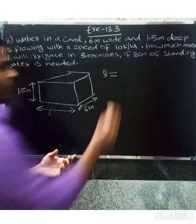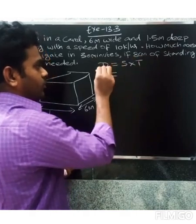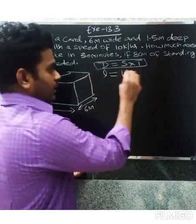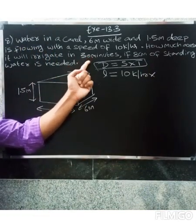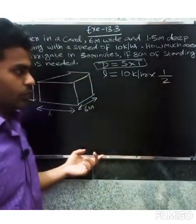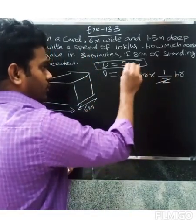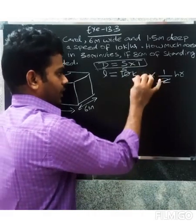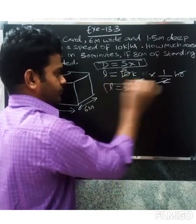First, we calculate the distance. Using the formula: distance equals speed into time. Speed is 10 kilometers per hour and time is 30 minutes. So the length equals 5 kilometers.